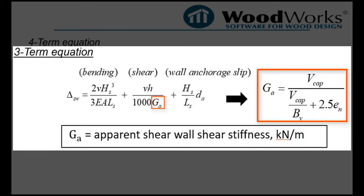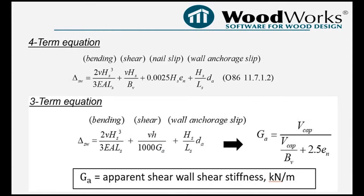which is dependent on the shear capacity of the shearwall, the shear-through thickness of the panel, and the nail slip associated with the nails on the wall. The three-term deflection equation approximates the shear and nail slip component when a shearwall is loaded to 100% of its shear resistance.